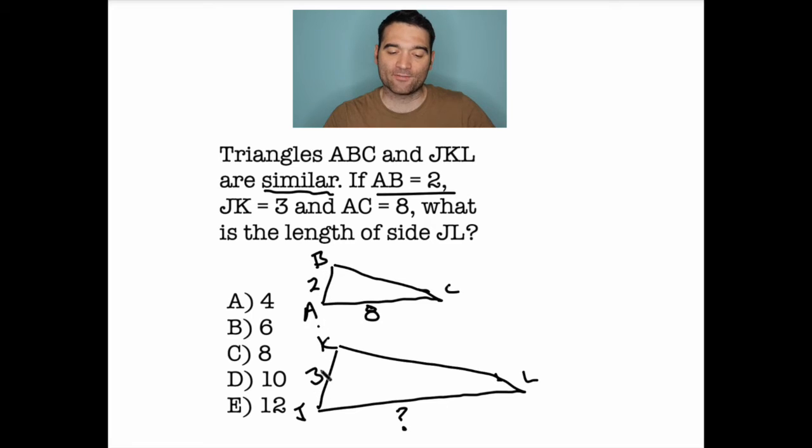Well, let's look at the two sides that we have in common here. AB and JK, what is the ratio of one to the other? Well, it looks like to go from AB to JK, we multiplied by 1.5. I did 3 divided by 2. That's 1.5.